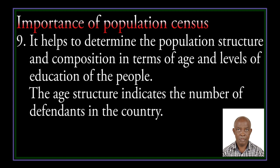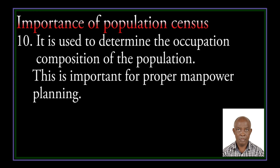Seven, it helps determine the population structure and composition in terms of age and levels of education. The age structure indicates the number of dependents in the country. Eight, it is used to determine the occupation composition of the population. This is important for proper manpower planning.